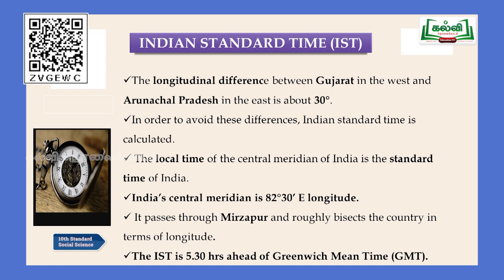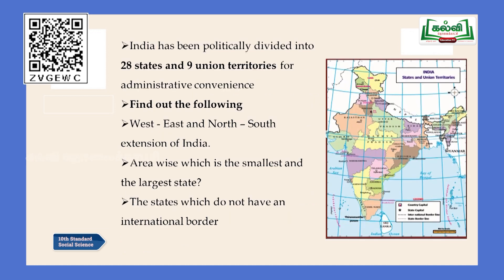IST means Indian Standard Time. IST is always five and a half hours ahead of Greenwich Mean Time, that is GMT. To differentiate: IST refers to the local time of India whereas GMT refers to world time.